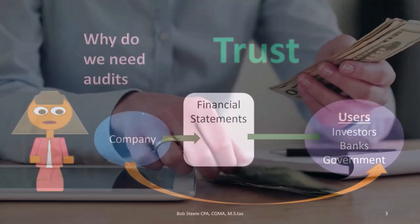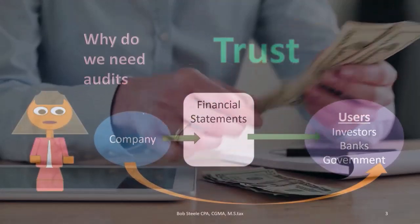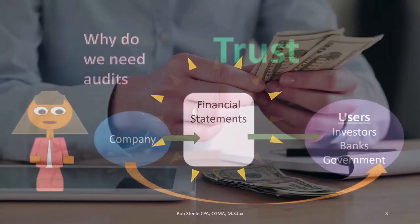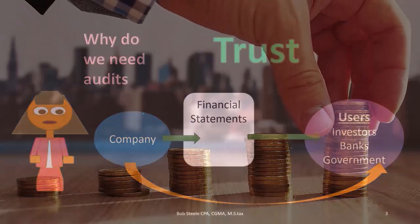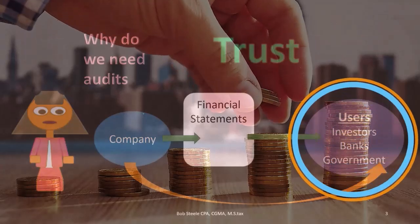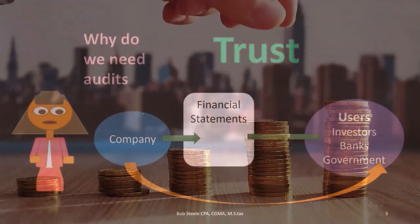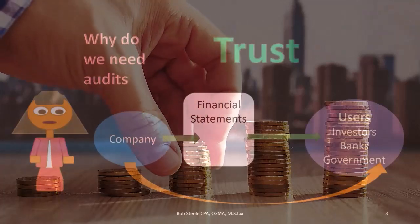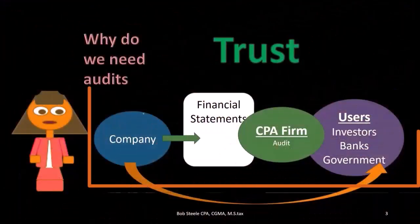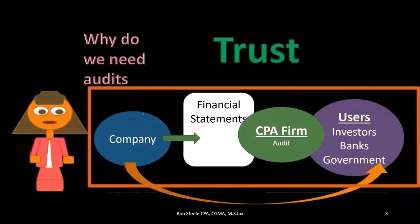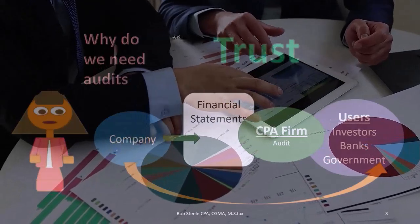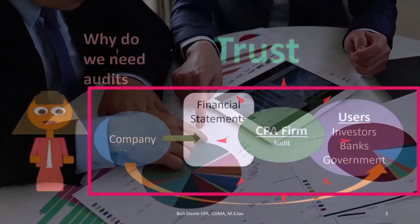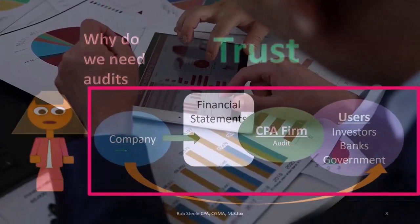But we might still have a problem. The end users might say, the company has an incentive to provide financial statements that aren't correct. Or the statements might not follow proper procedures or agreed-upon standards — there could be errors. So end users may still not fully trust the financial statements, and that's where the CPA firm comes in with the audit, which should give some level of assurance.